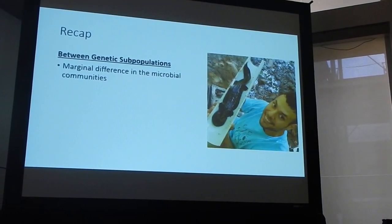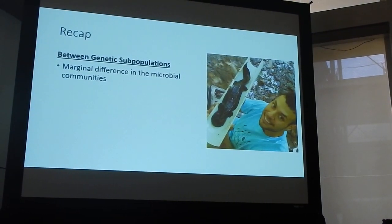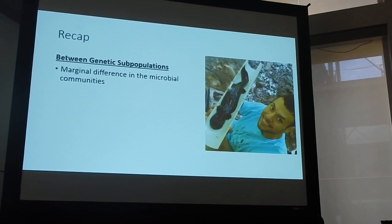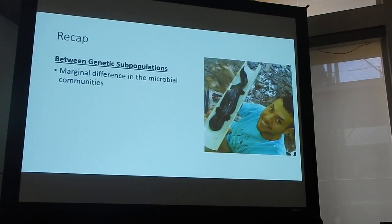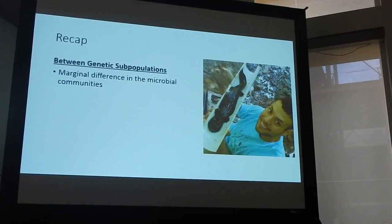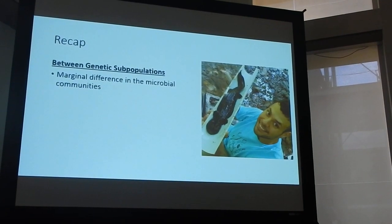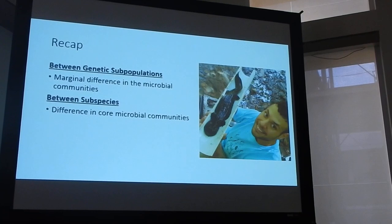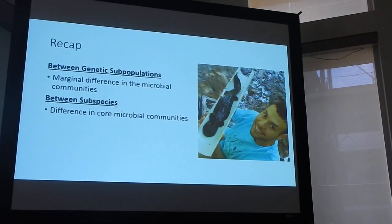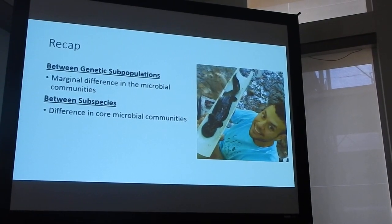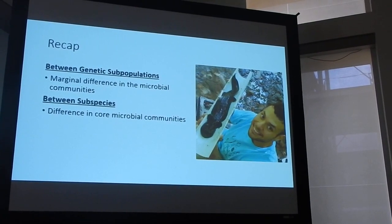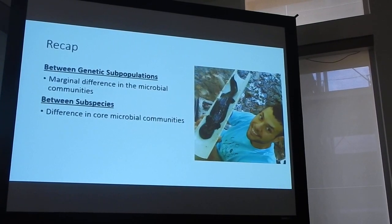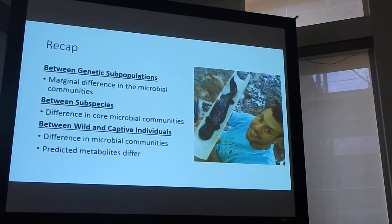So just to recap: between the genetic subpopulations, we saw marginal differences in microbiota communities for both subspecies. Between the subspecies, we saw differences in the core microbiome.